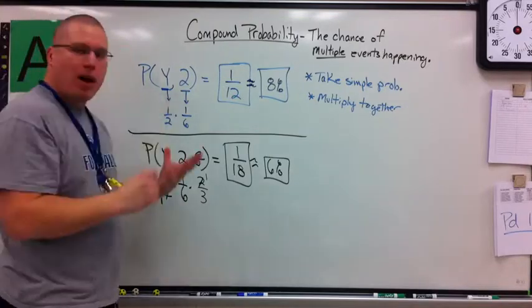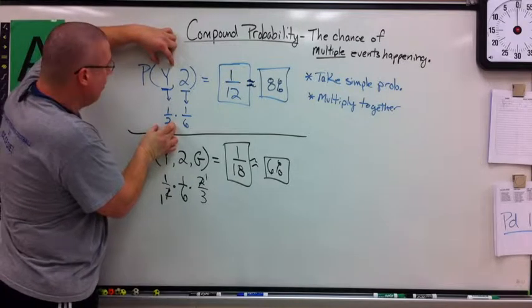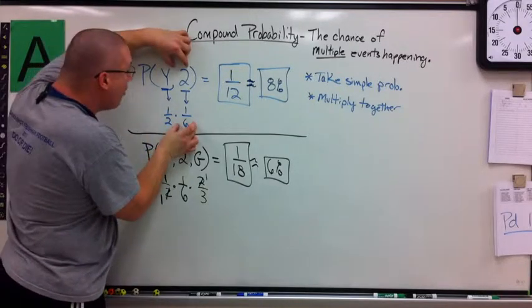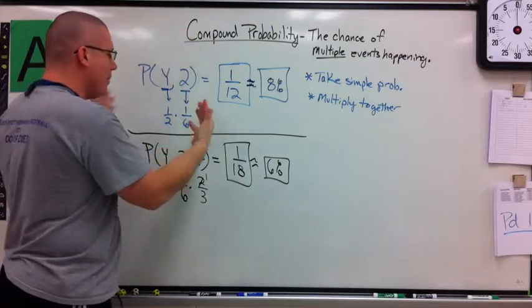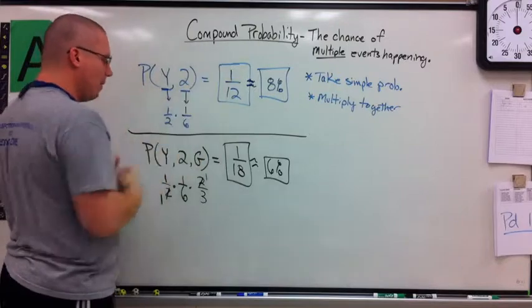Just understand if I have compound probability, find the chance of one thing happening. Find the chance of any other event happening and know that I multiply them together. And that's how you find out what the chance of everything happening.